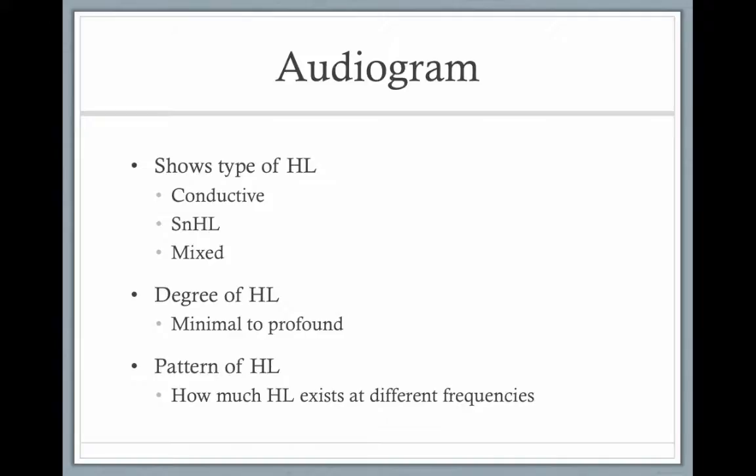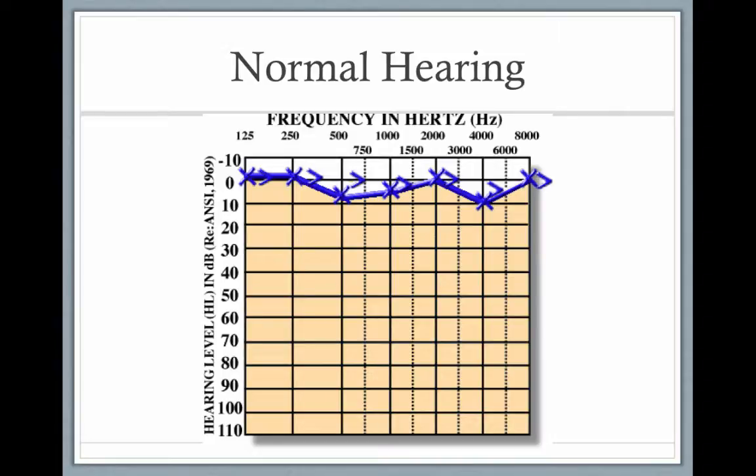The audiogram will show you what type of hearing loss it is — be it conductive, sensorineural, or mixed. Remember, sensorineural hearing losses are more serious than conductive hearing losses; conductive hearing losses tend to resolve themselves on their own. It'll also show you the degree of hearing loss, minimal to profound, and the pattern — whether it's a low-frequency or high-frequency hearing loss.